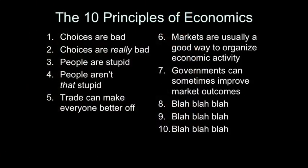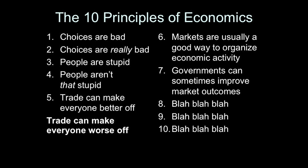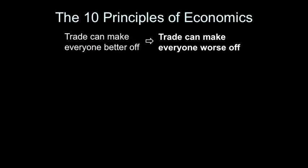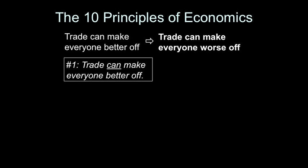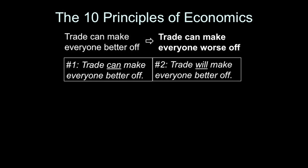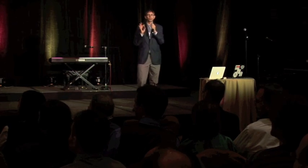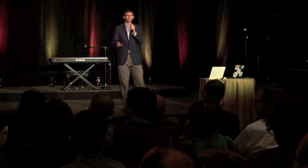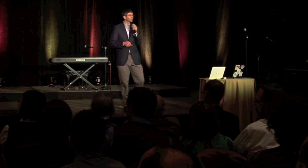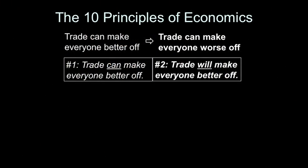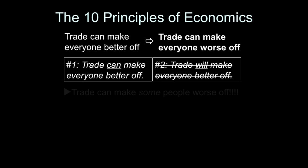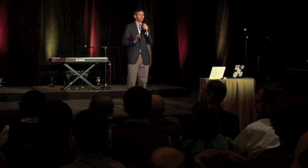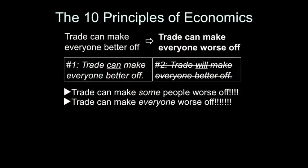We move on to every economist's favorite topic, free trade. Principle five: trade can make everyone better off. Translation: trade can make everyone worse off. You may wonder how the translation of principle five is the opposite of the principle itself. I have a simple proof. Compare two statements: trade can make everyone better off, and trade will make everyone better off. If you had to pick one to put in your best-selling economics textbook, it's no contest — the second statement is clearly better. But Mankiw uses the first statement instead. And if you think about why, there's only one possible explanation: the second statement has got to be wrong. In other words, trade can make some people worse off. And from there, it's just a hop, skip, and a jump to trade can make everyone worse off.